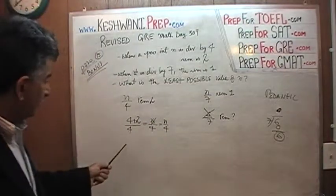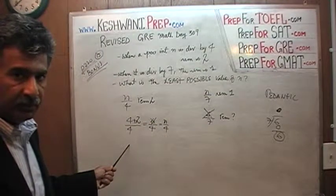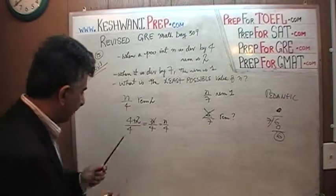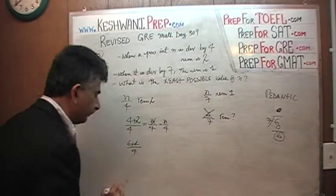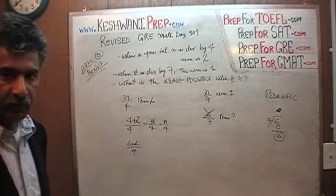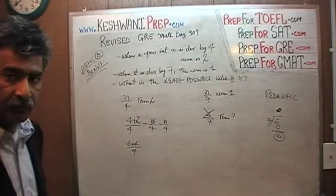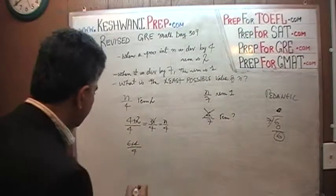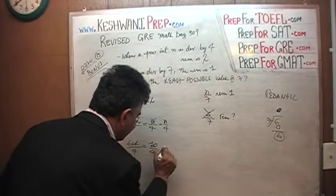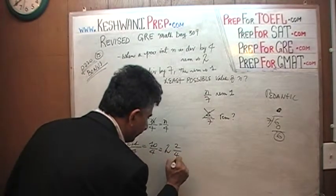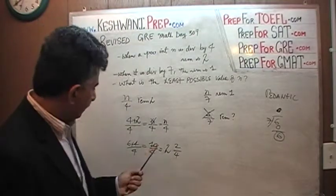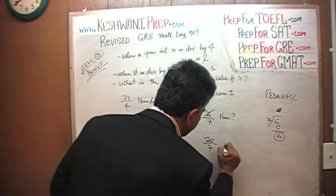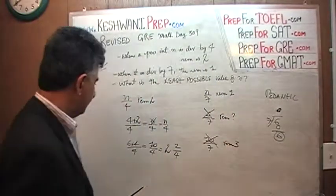Let's try the next one. The next smallest number which when divided by 4 gives a remainder of 2: we take our 6 and add 4 to it. Because 4 goes evenly into 4, and 6 had a remainder of 2, so 6 plus 4 = 10 should still have a remainder of 2. Indeed, 10 divided by 4 goes 2 times with a remainder of 2. So our N is 10. But 10 divided by 7 gives a remainder of 3. That does not work either.